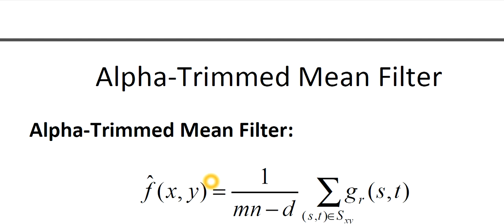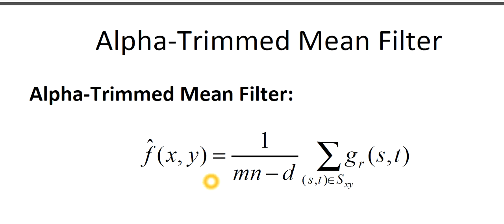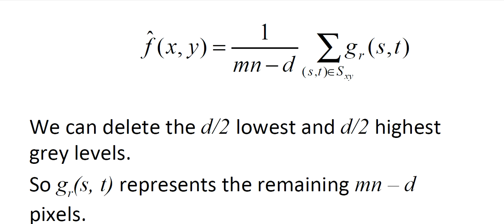Coming to the alpha-trimmed filter and the equation for alpha-trimmed mean filter is that f(x,y) is equal to 1 by mn minus d summation z_r(s,t) where (s,t) belongs to S_xy. You should note down that here we can delete the d/2 lowest and d/2 highest gray values. And z_r(s,t) represents the remaining mn minus d pixels. mn means you know the total pixels will be mn and then mn minus d pixels will be represented by z_r(s,t).